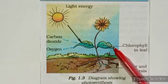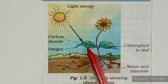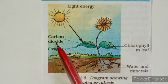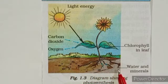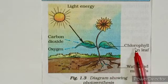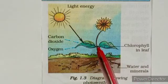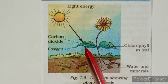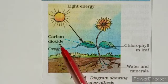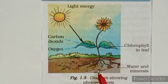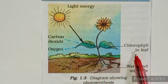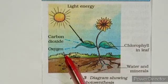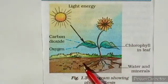Leaves are called the kitchen or food factory of a plant. The leaves use carbon dioxide, water, and minerals to make food. The chlorophyll in the leaves traps energy from sunlight, and the leaves use this energy to convert carbon dioxide, water, and minerals into food. Hence, chlorophyll and sunlight are essential for a plant to prepare food. During this process, oxygen and water vapor are released. This process is called photosynthesis.